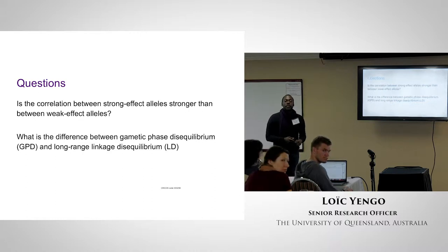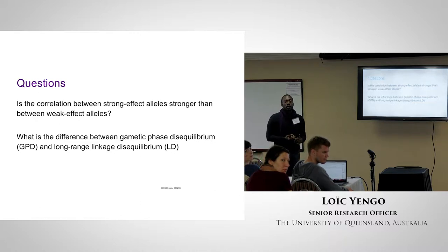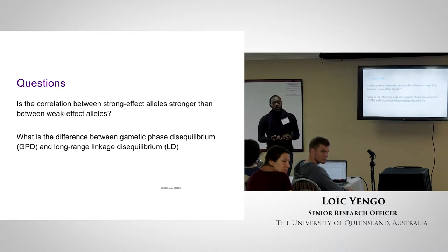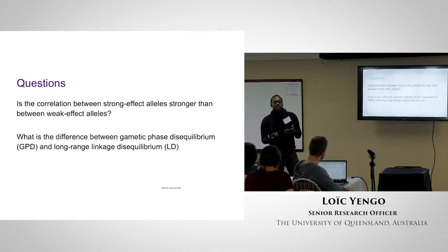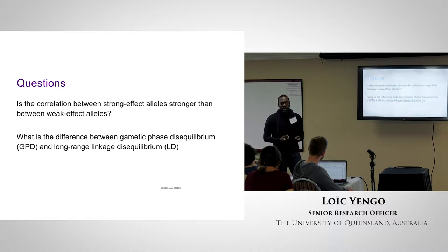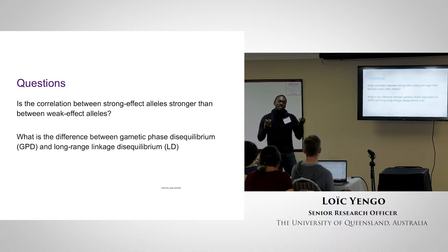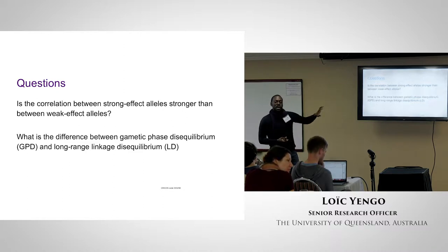Would an example of negative correlation be cases of inter-ethnic relationships, where on some traits you actually have the opposite? Yes, there are examples where people mate between ethnic groups. But if you look at this at the population level, most people will still mate within their ethnic ancestry group. So we're talking about correlations at the population level.